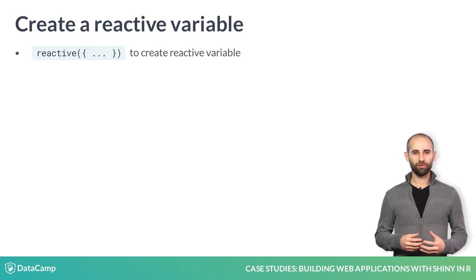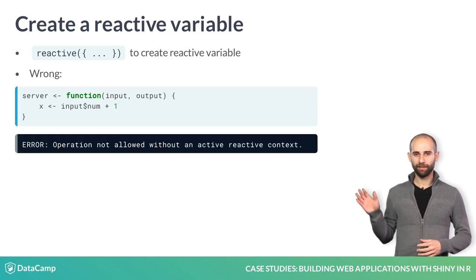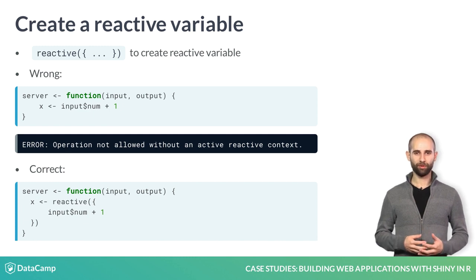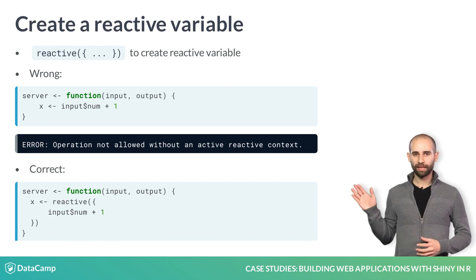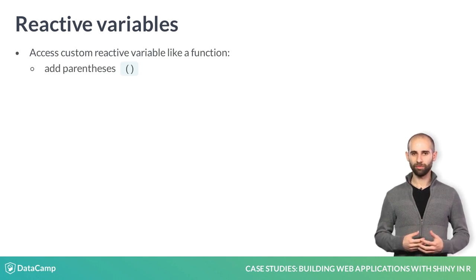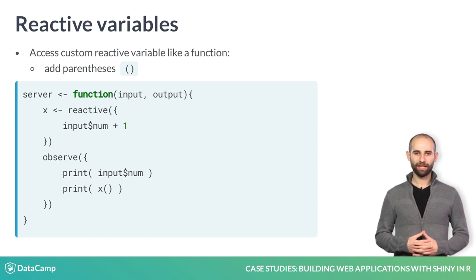You can create your own reactive variables using the reactive function, which is another reactive context. You might be tempted to write code that accesses input$num directly, but this will result in the same error as before, since input$num is being accessed outside a reactive context. The correct way to define a reactive variable is using the reactive function, like this. When you want to access a reactive variable that you created with the reactive function, you need to add parentheses to the variable name, as if you were calling a function. Notice how in the observer in this code, accessing x requires parentheses, but accessing the input does not.